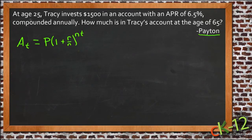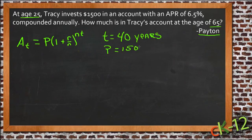She's going to have the money in the account from age 25 to 65, so it's going to be in there 40 years. It's $1,500 she's investing, so her time is 40 years. Her principal, P, would be $1,500, that's the amount she started with.